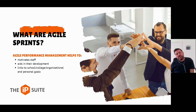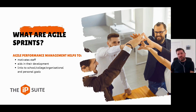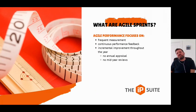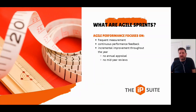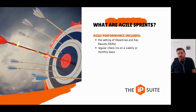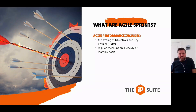What are agile sprints? Agile performance management is an approach to motivating staff performance, nurturing their development, and aligning these objectives under the school or college priorities. It focuses on frequent measurement, continuous performance feedback, and incremental improvement throughout the year, rather than an annual appraisal cycle with one or maybe two review meetings. A key point of switching to agile performance management is the setting of objectives and key results, or OKRs.